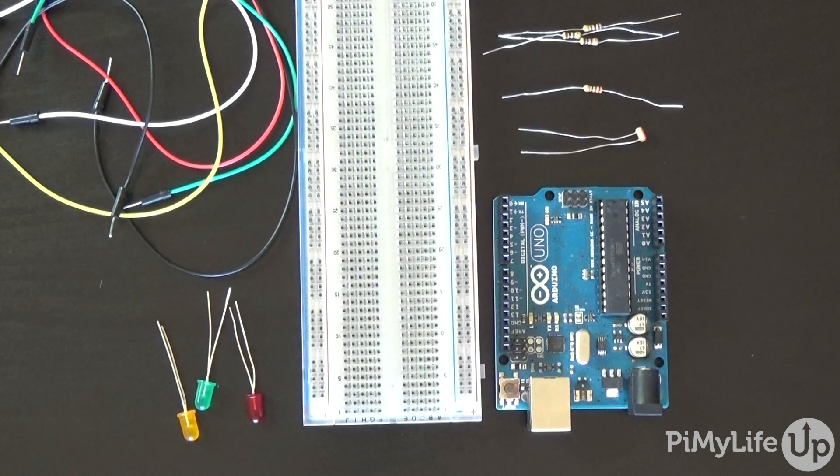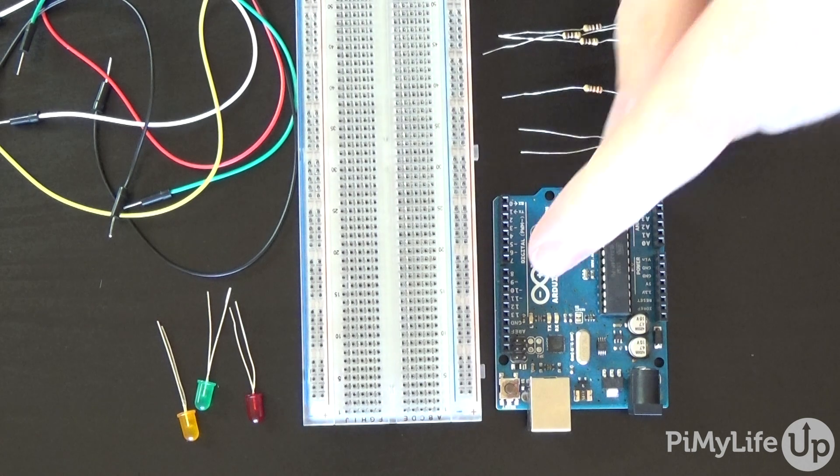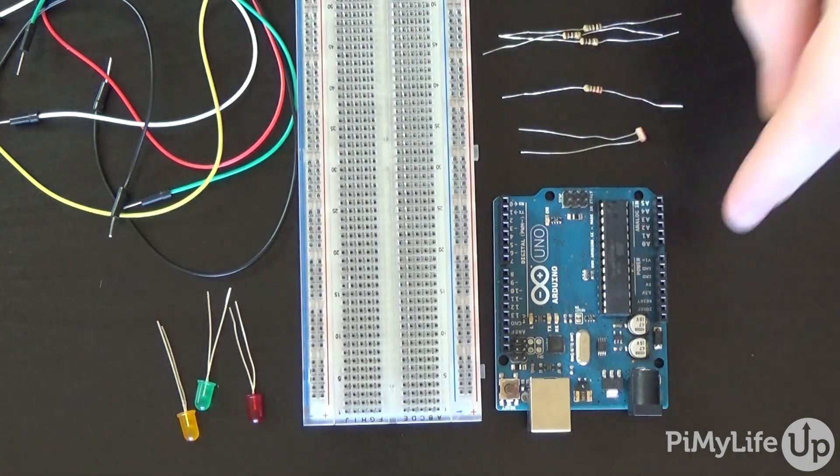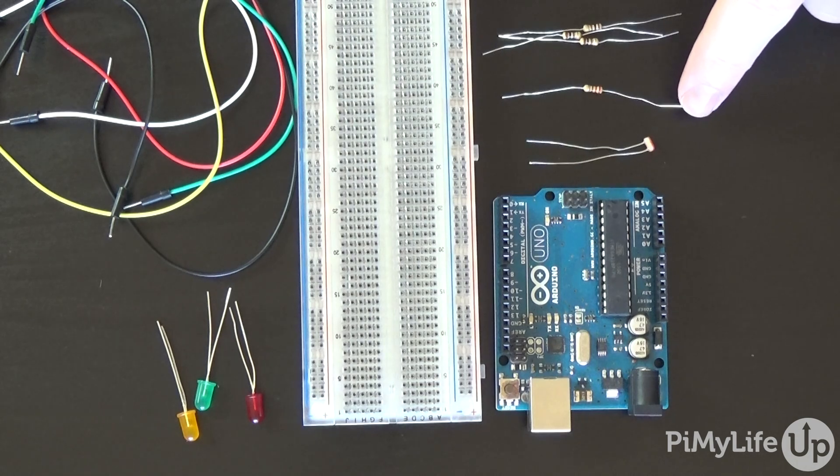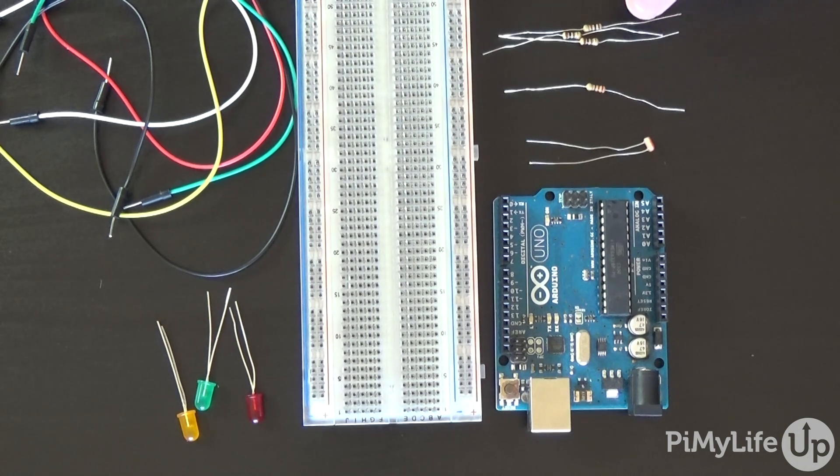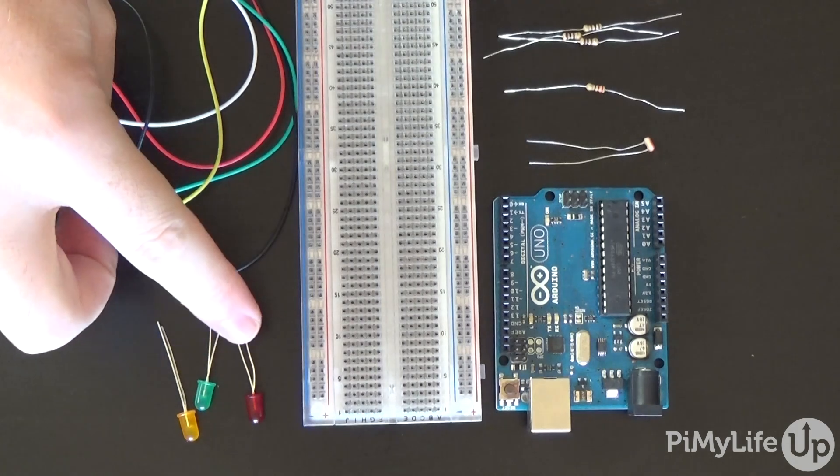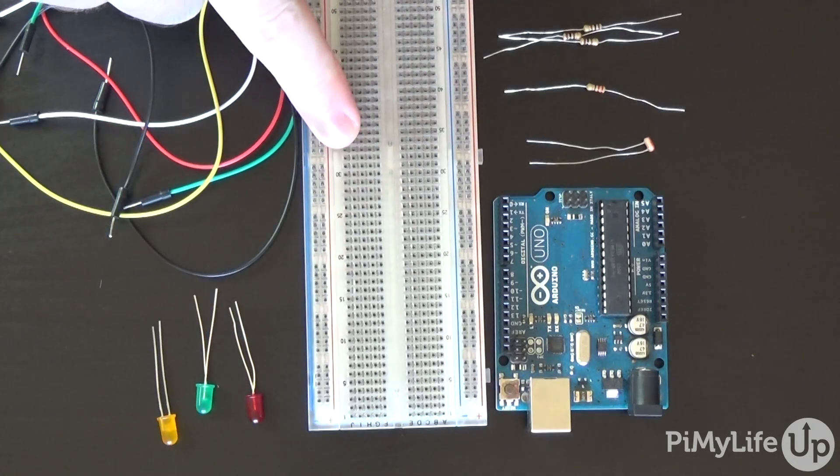You won't need much equipment to complete this tutorial. You will need an Arduino Uno, one photo resistor, one 220 ohm resistor, three 100 ohm resistors, one red LED, one green LED, one yellow LED, a breadboard, and breadboard wire.